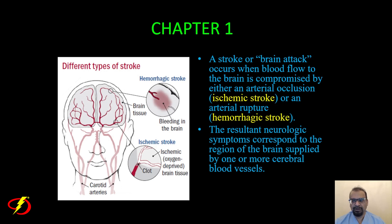A stroke or brain attack occurs when blood flow to the brain is compromised either by an arterial occlusion — a clot stopping blood flow in the brain, which we call an ischemic stroke — or a ruptured blood vessel in or covering the brain, which we call a hemorrhagic stroke. The resultant neurologic symptoms correspond to the region of the brain affected by these blood vessels.